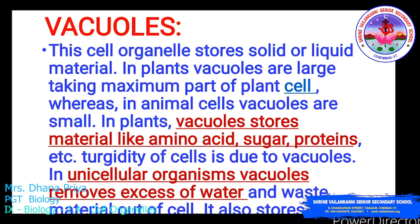Vacuoles are a type of cell organelle present in plant cells, occupying a large space within the cell. This organelle stores solid or liquid material. In plant cells, vacuoles are large and occupy the maximum part of the cell, whereas in animal cells vacuoles are small. Plant vacuoles store materials like amino acids, sugars, and proteins. Turgidity of the cell is due to the vacuole. In unicellular organisms, vacuoles remove excess water and waste material out of the cell.